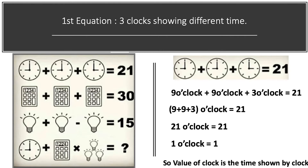Jumping to our first equation. We have 3 clocks and the time shown by each clock is noted. The first clock is showing 9 o'clock, another one is 9 o'clock, and the third one is 3 o'clock, and their sum is equal to 21. On solving this, we get 9 plus 9 plus 3 equals 21.